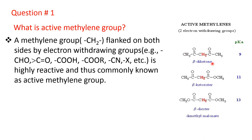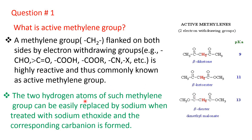See this compound — this is acetyl acetone, which is a beta-diketone; it contains active methylene group. Then, this is ethyl acetoacetate, which is a beta-keto ester; this also contains active methylene group. Similarly, dimethyl malonate, it is also a beta-keto ester, contains active methylene group. All these compounds, because of the presence of active methylene group, can easily generate carbon ion and therefore they are very reactive. The two hydrogen atoms of such methylene group can be easily replaced by sodium when treated with sodium ethoxide, and the corresponding carbon ion is formed.